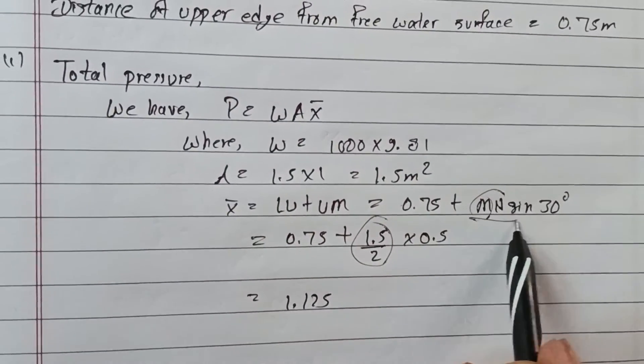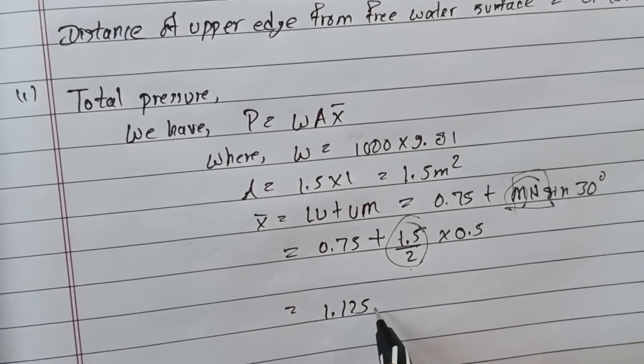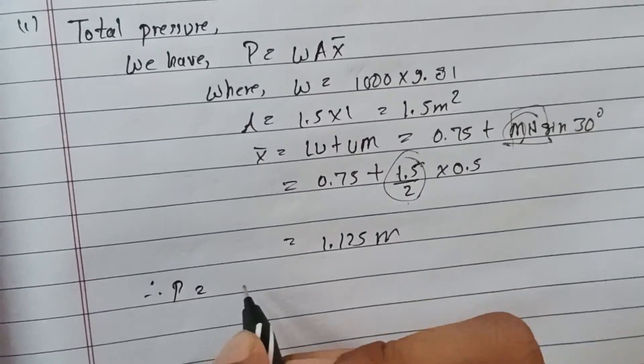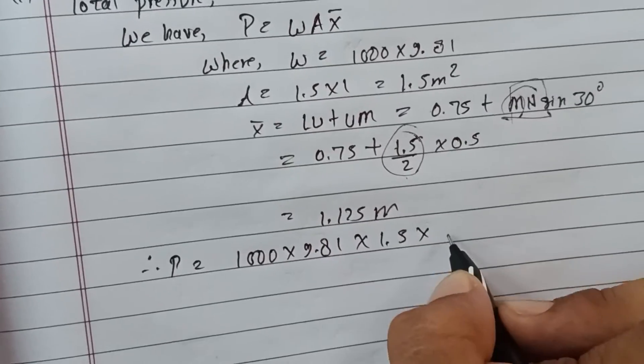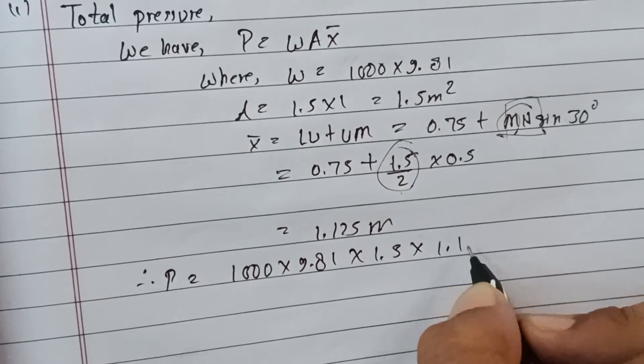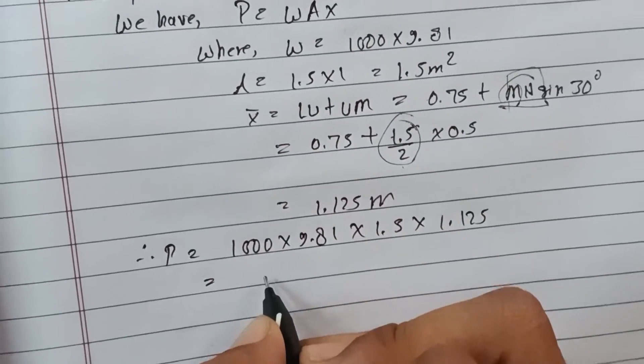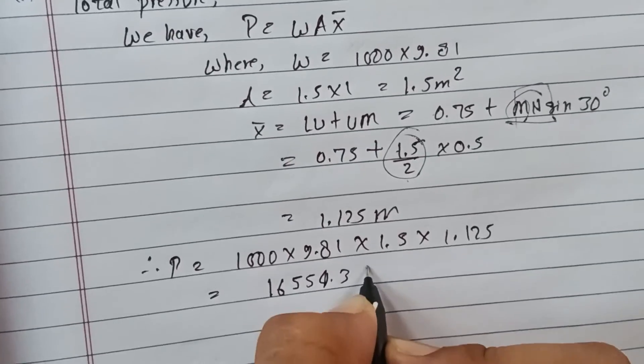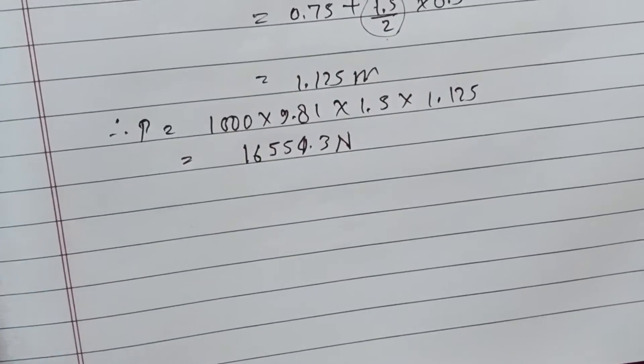The depth is 1.5 meters, so m_n is half of that from the center. Therefore x-bar equals 1.125 meters. Substituting values: 1000 times 9.81 times area 1.5 times x-bar 1.125 gives us the answer: 16,554.3 Newtons.